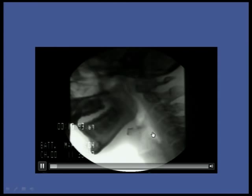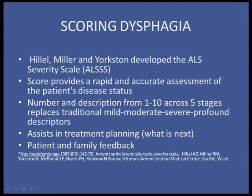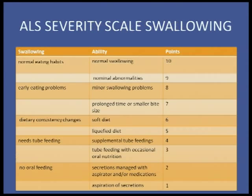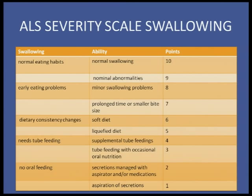For scoring dysphagia, we use the same ALS severity tool. The swallowing scale goes from normal eating habits, to nominal swallowing abnormalities, early eating problems, minor swallowing issues, prolonged manipulation with smaller bites or sips, dietary consistency changes to soft or pureed diet, moving toward tube feeding, supplemental tube feeding, tube feeding with occasional oral nutrition, no oral feeding, secretions managed with an aspirator or medication, all the way to aspiration of secretions.